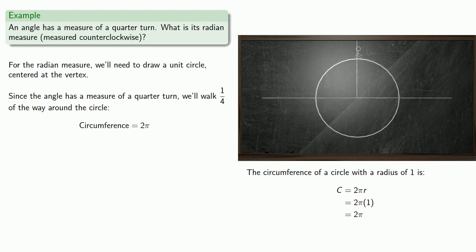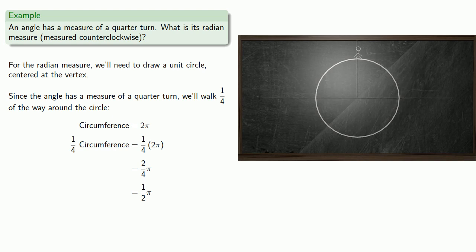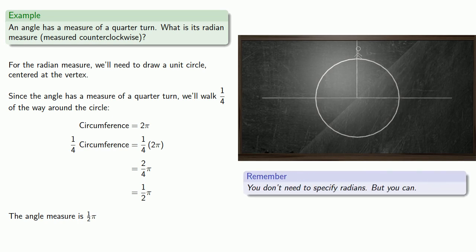We've walked one quarter of the way around the circle, so we've walked one quarter of the circumference. And so that distance is π/2. Now something worth keeping in mind is that you can say the angle measure is π/2. If you're using radians, you don't need to specify radians, but you can if you want to.